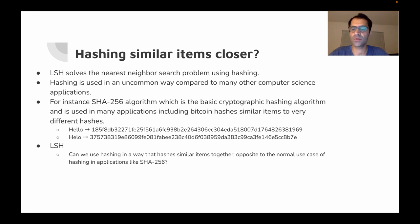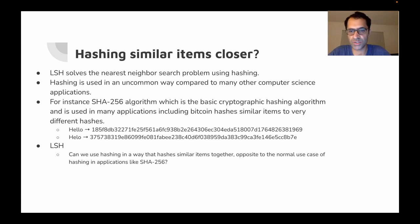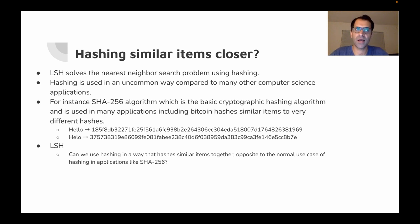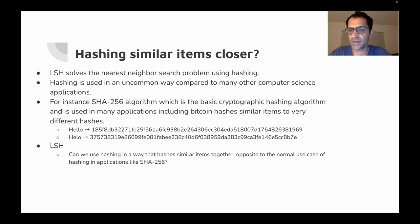In many traditional hashing algorithms in computer science, we want to avoid collision — we don't want to hash to the same bucket. For instance, in cryptographic algorithms like SHA-256, which is the basic cryptographic hashing algorithm for Bitcoin and other cryptocurrencies, the idea is to hash strings as far apart as possible. If I hash the word 'hello' and then hash 'helo' (with one 'l'), the resulting hash values are completely different.